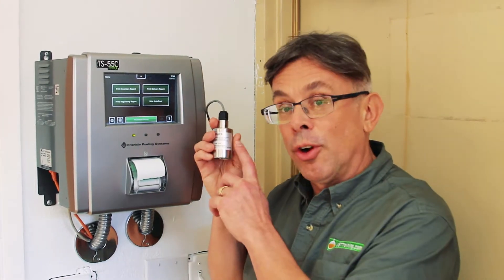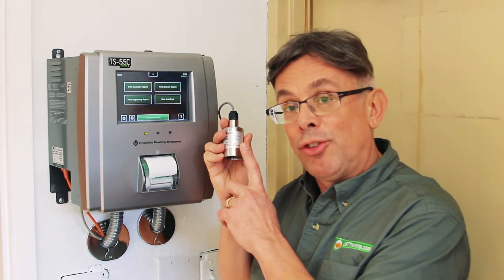Hi, this is Ben Thomas with UST Training, and this is a Tank Savvy Minute. Many underground storage tank systems today are double-walled, meaning there is a double wall tank, double wall piping, and a little sensor in between what's called the interstitial space.